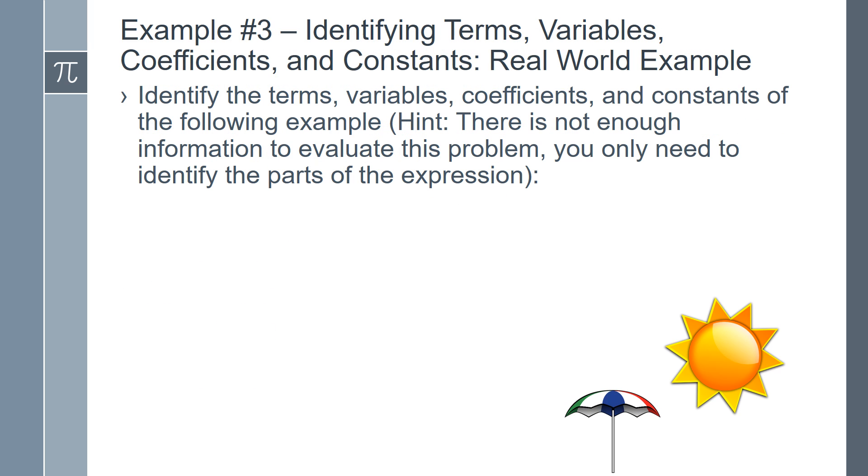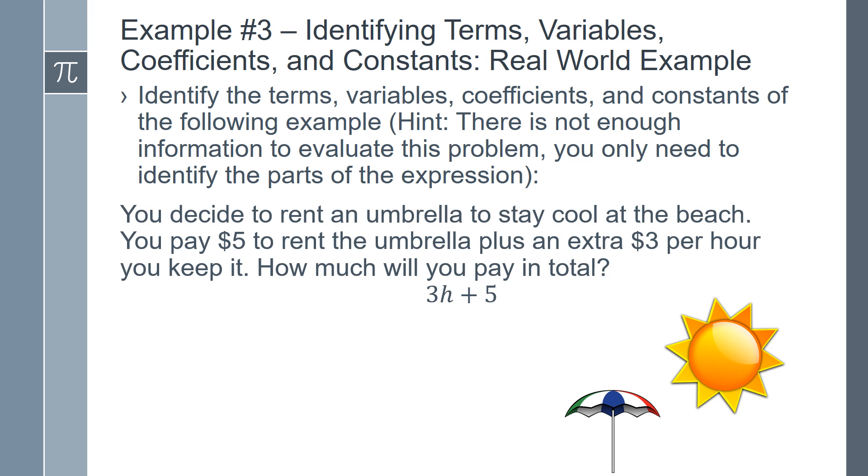For example number 3, we will identify the terms, variables, coefficients, and constants of a real world example. You decide to rent an umbrella to stay cool at the beach. You pay $5 to rent the umbrella, plus an extra $3 per hour you keep it. How much will you pay in total? The algebraic expression is 3h plus 5.